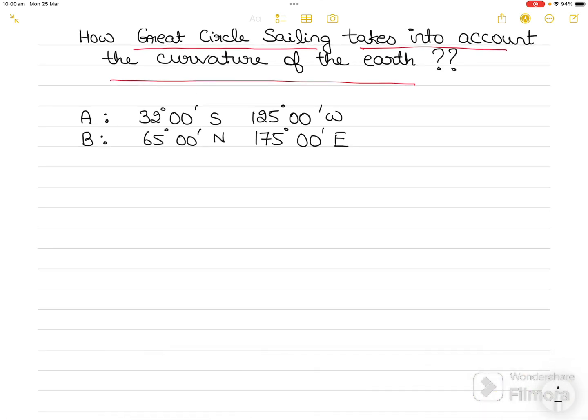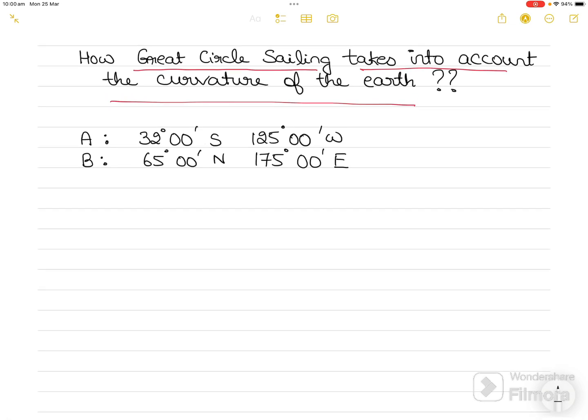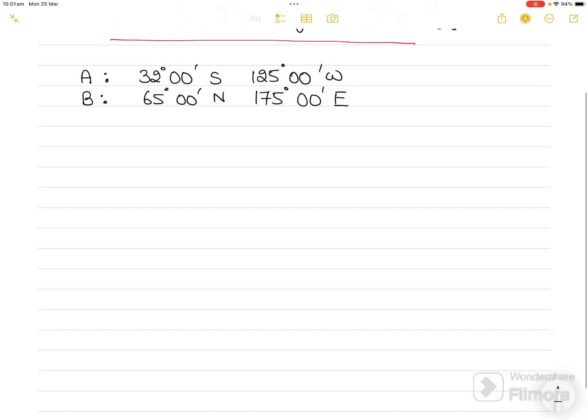We always say that the difference between great circle sailing and plane sailing is that plane sailing ignores the curvature of the earth and assumes the earth is flat, but great circle sailing does not. That is why plane sailing only holds true for distances up to about 600 nautical miles, whereas great circle sailing has no such restrictions. What do we mean by great circle sailing takes into account the curvature of the earth?